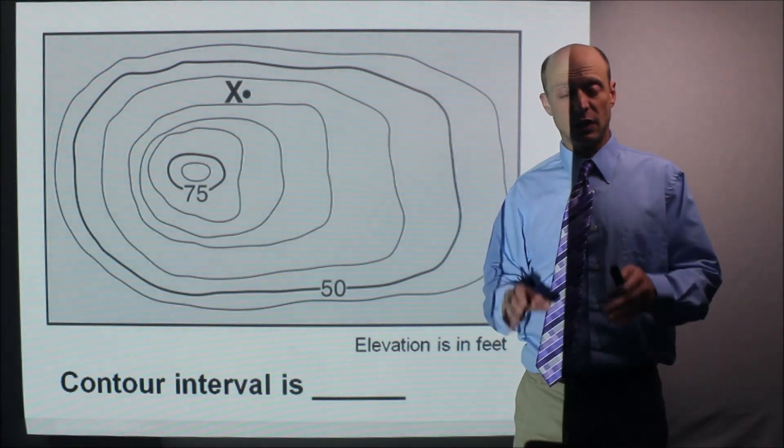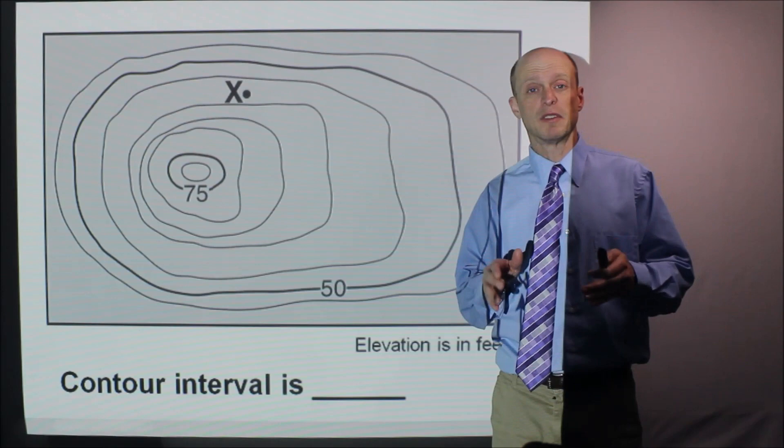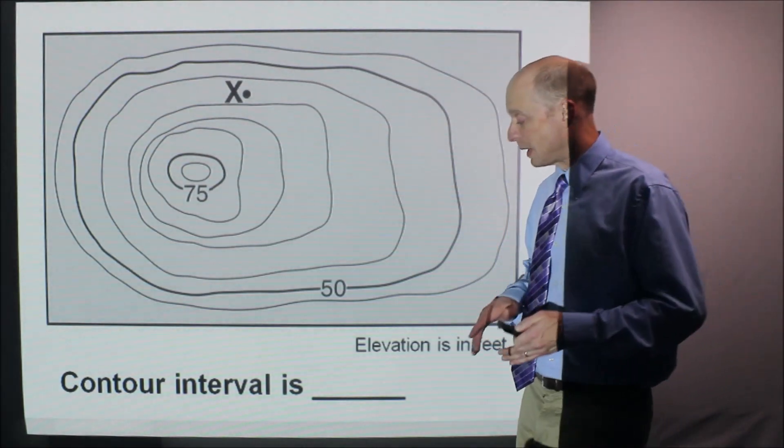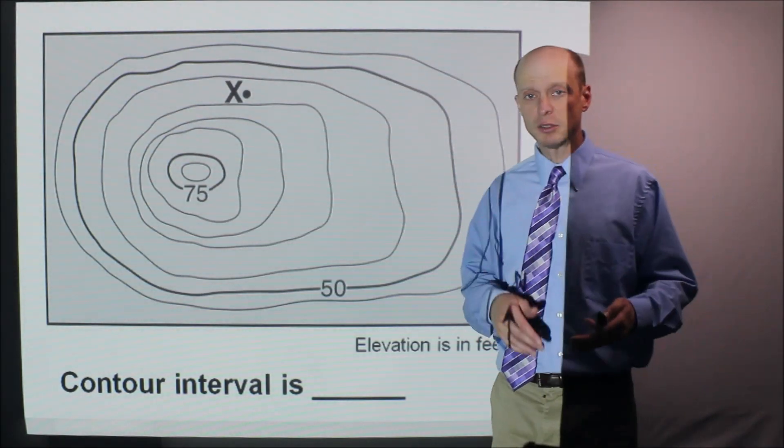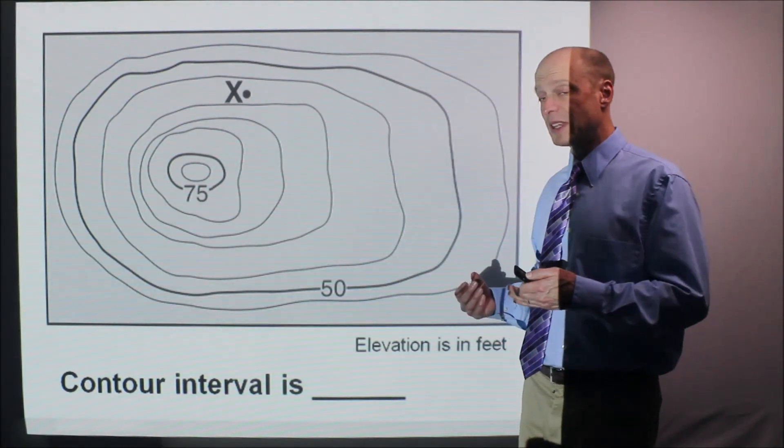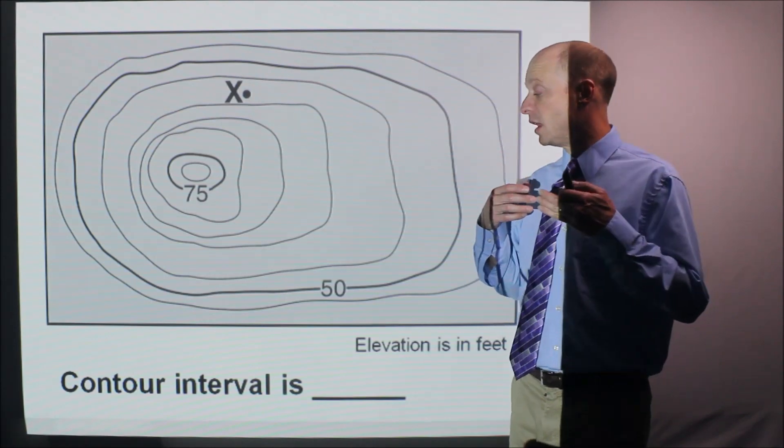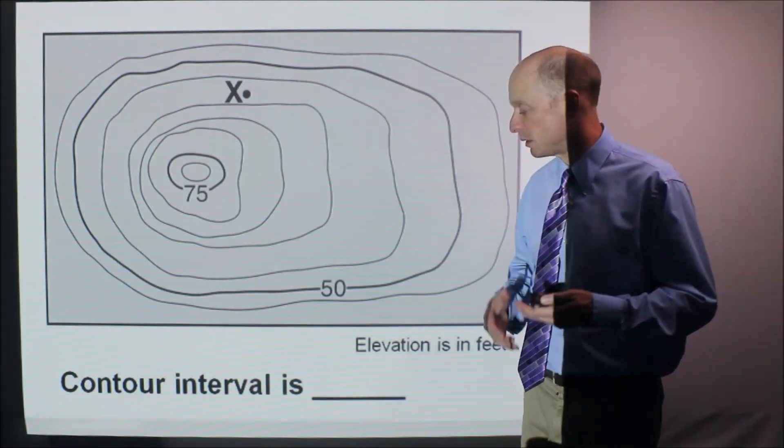Contour maps, ISO lines, really important for the Regents exam. I'm going to focus on some of the key parts of contour maps. So contour interval. Contour interval is what each ISO line counts by. It's usually given to you, but sometimes you have to figure it out on your own. But it's definitely important to know when you're dealing with maps.